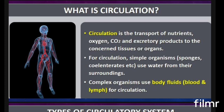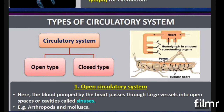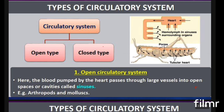These fluids help in the exchange and transport of all nutrients. This is what is called circulation. Now we need to understand the different types of circulatory systems. Depending on whether blood vessels are present and whether the circulatory medium passes through a closed pathway or not, the circulatory system is classified into two types: open circulatory system and closed circulatory system.